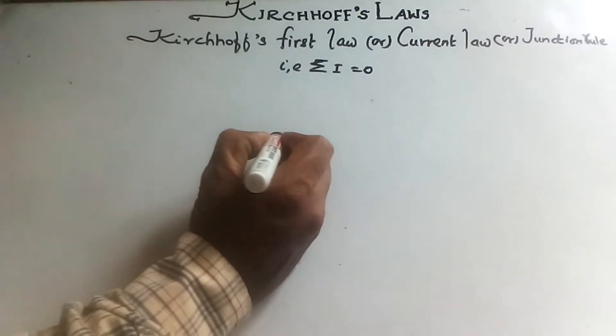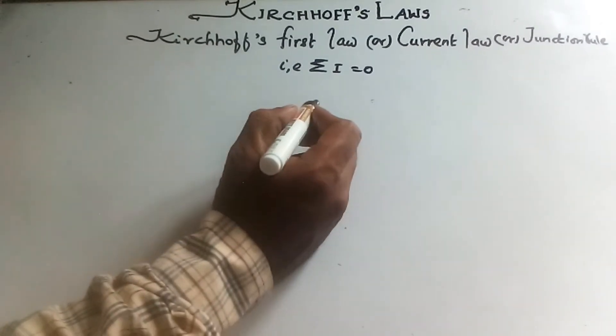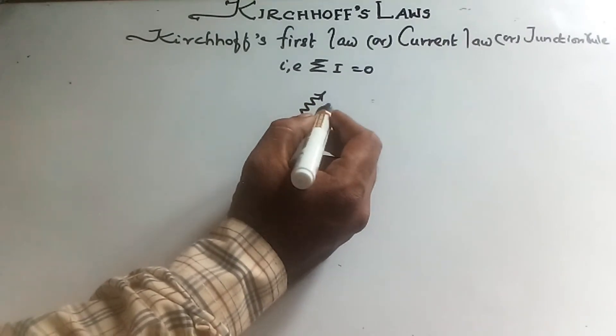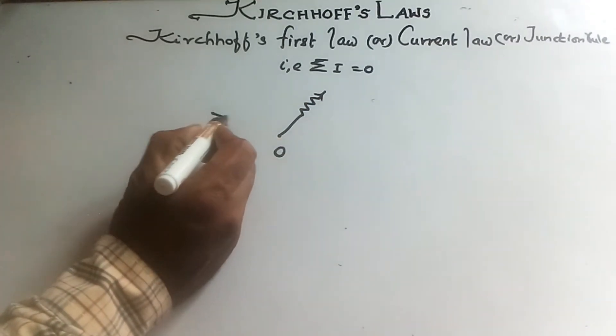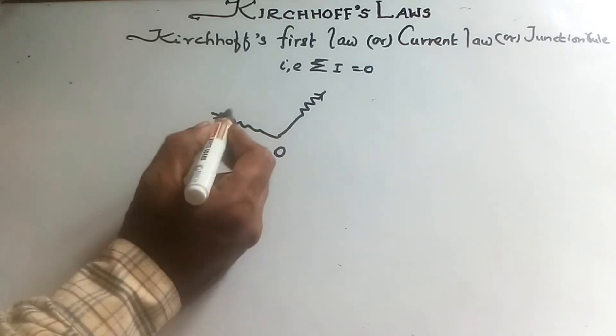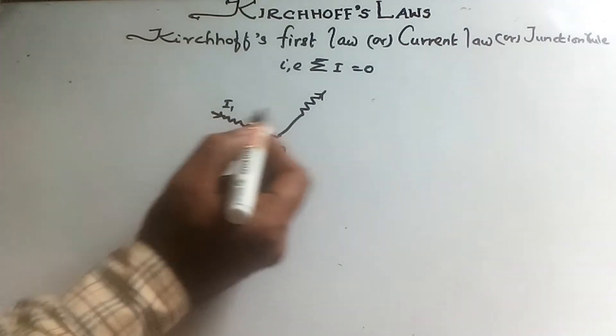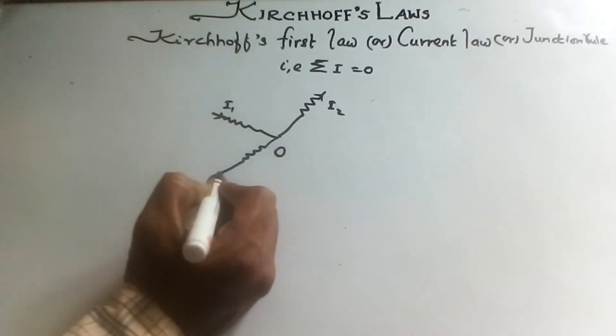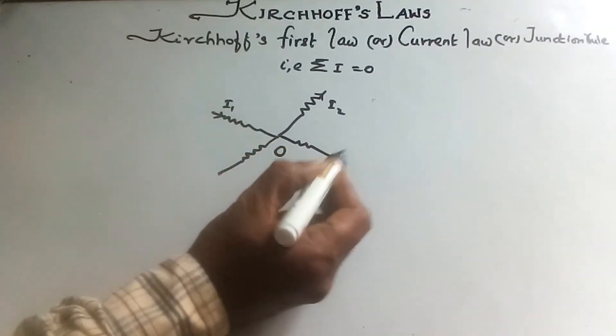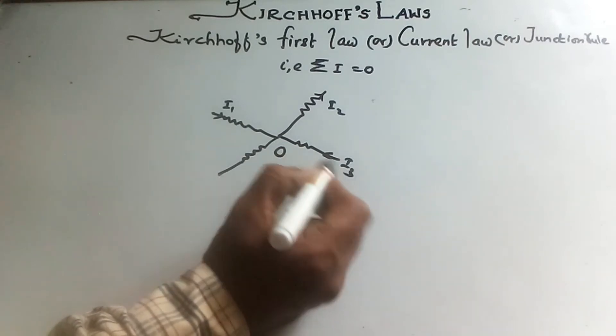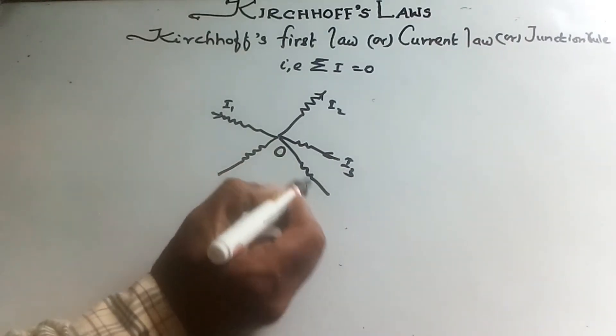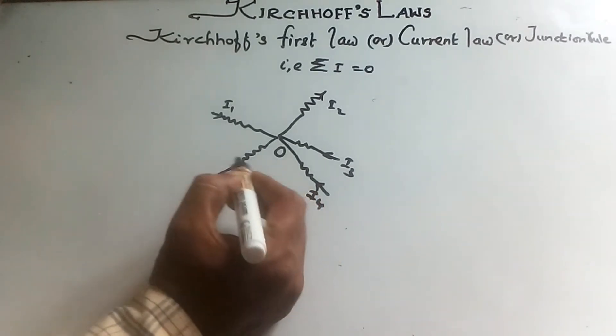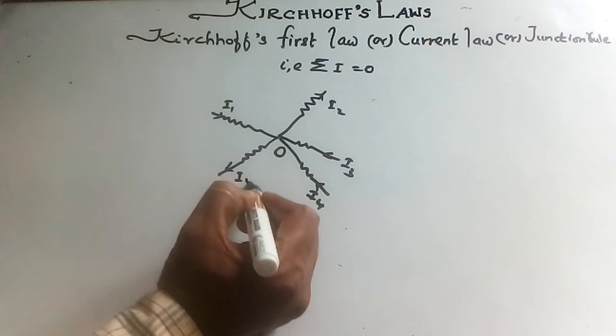Consider the junction O. These are the currents from various branches: I1, I2, I3, I4, and I5.